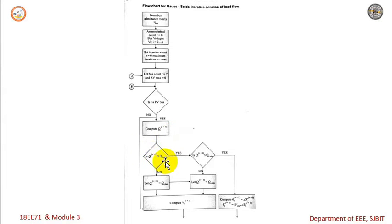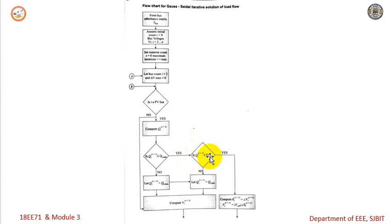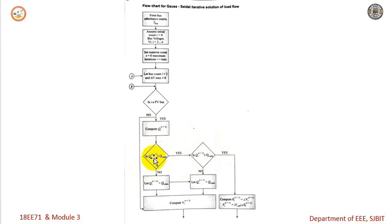First, check the maximum limit: if the calculated Q_i for iteration r+1 is less than Q_i max, then check the minimum limit. If the calculated Q_i value is greater than Q_i minimum, the computed Q_i for the PV bus is retained and we proceed to compute the angle delta, that is, compute delta_i.